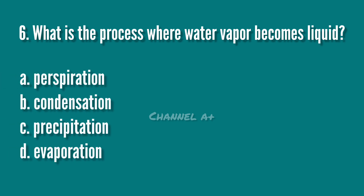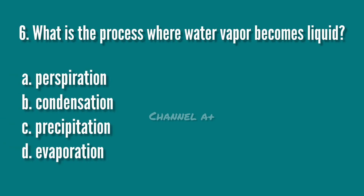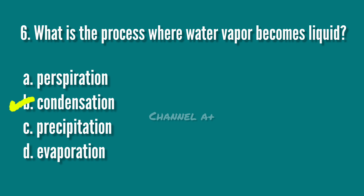What is the process where water vapor becomes liquid? A. Perspiration. B. Condensation. C. Precipitation. D. Evaporation. The answer is B. Condensation.